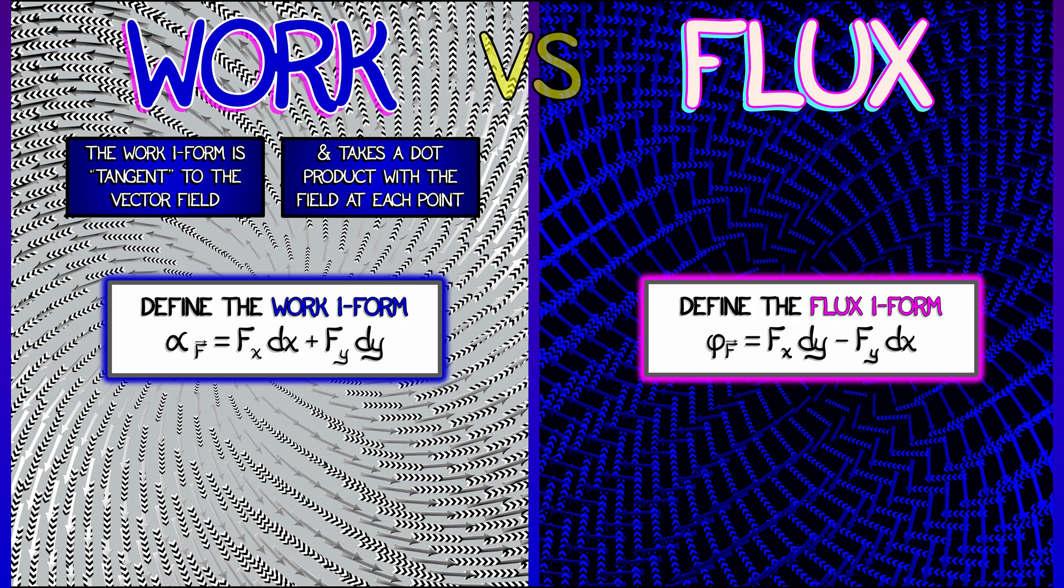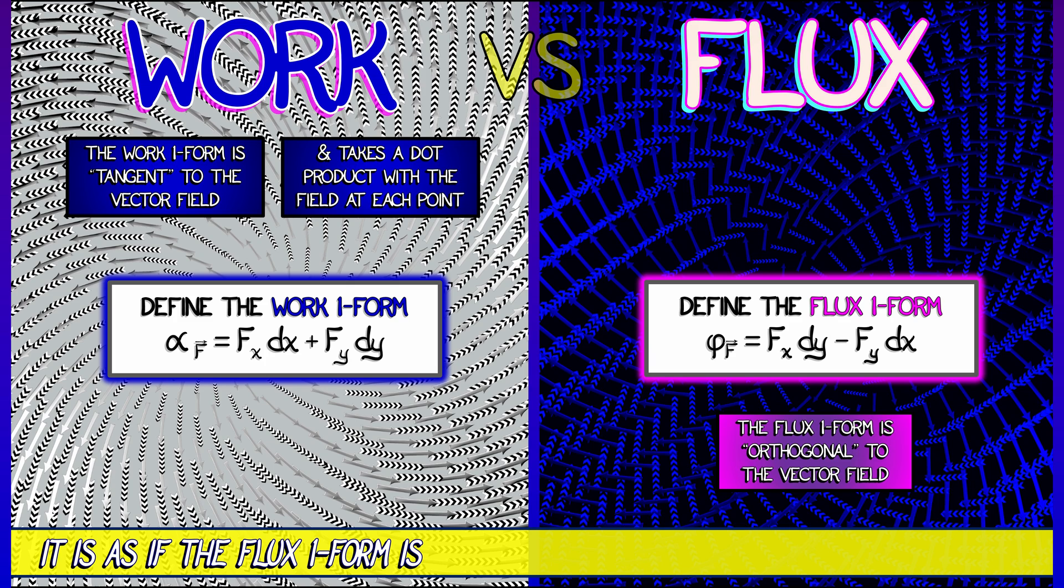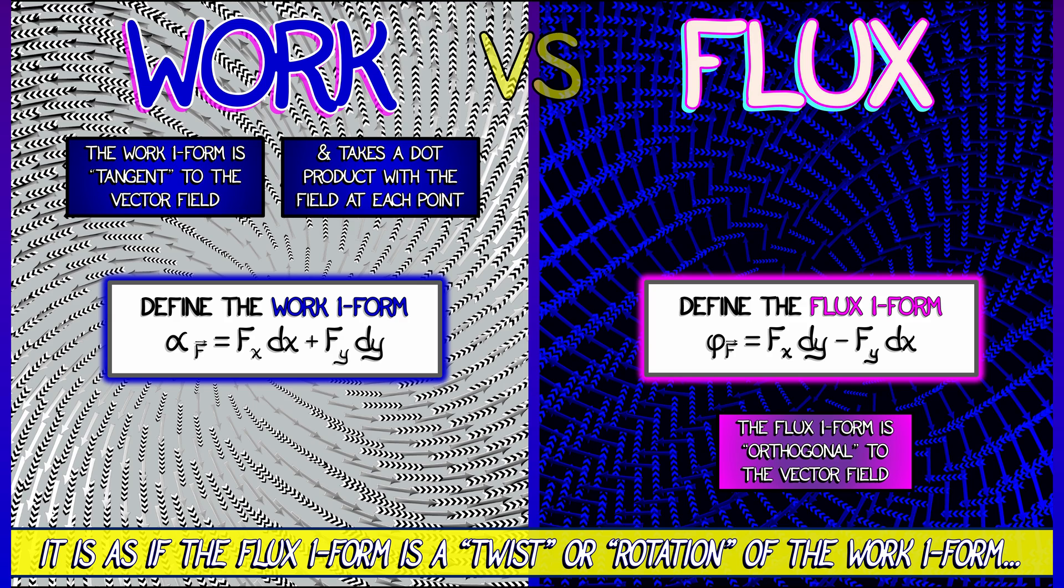In contrast, the flux one-form is, if you will, orthogonal to the vector field. It's as if that flux one-form is a twisted or rotated version of the work one-form of that same vector field.